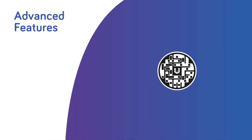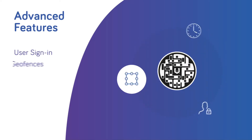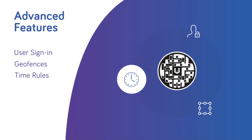vPlatform enables you to assign advanced features to manipulate what each user can access after scanning a vCode. User sign-ins, geofences, and time rules allow you to deliver bespoke content to users dependent on who they are, where they are, and when they make a scan. A user will only see what they are permitted to see.